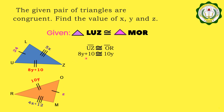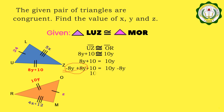So we have 8Y plus 10 is equal to 10Y. Adding negative 8Y to both sides of the equation, we have: negative 8Y plus 8Y plus 10 is equal to 10Y minus 8Y. The negative 8Y and positive 8Y cancel out, giving us 10 is equal to 2Y. Dividing both sides by 2, we get Y is equal to 5.